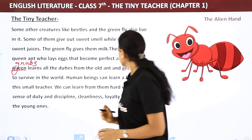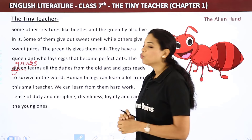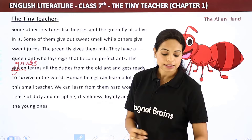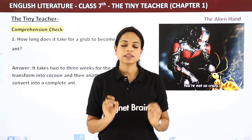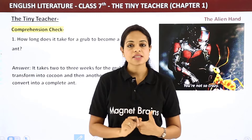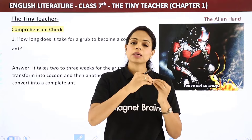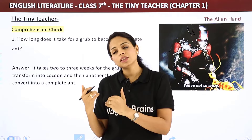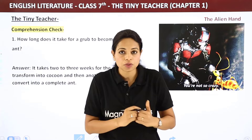Human beings can learn a lot from this small teacher: hard work, sense of duty and discipline, cleanliness, loyalty, and care for the young ones. The life cycle of an ant: the queen lays eggs, eggs hatch into grubs, grubs wrap into cocoons for three weeks, then emerge as perfect ants. After teaching and training, they are ready to go out into the world.